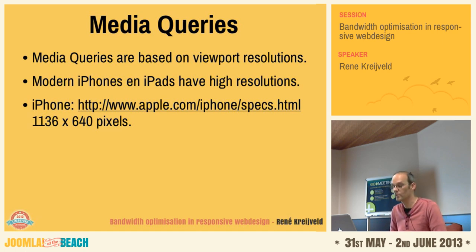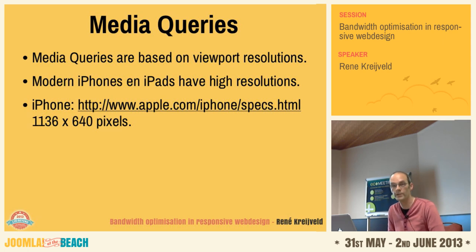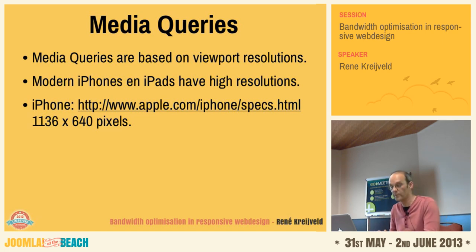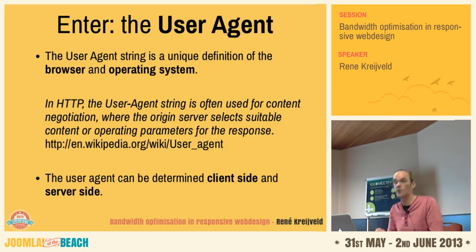It might be a better option to hide certain content on tablets and mobiles based on the browser and device that the website visitor uses. What you can use to determine this is the user agent. The user agent string is a unique definition of the browser and the operating system. In HTTP, the user agent string is often used for content negotiation, where the origin server selects suitable content for the response. The user agent can be determined on the client side with JavaScript, or on the server side with PHP.